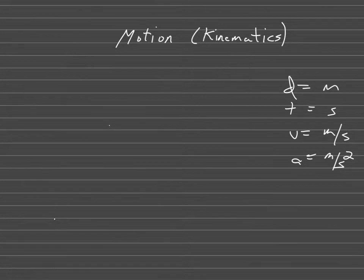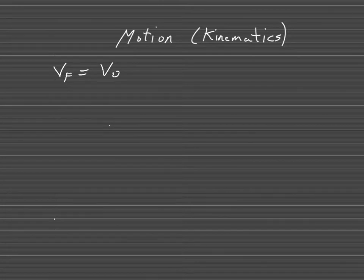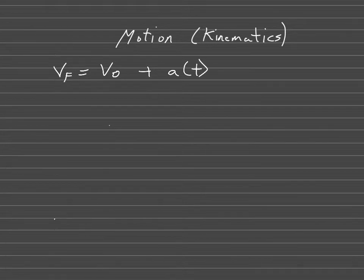We have more equations that relate all these things together — they are called the Big Four equations. The first one is: Vf equals V-naught (initial velocity) plus a times t. So final velocity equals initial velocity plus acceleration times time.